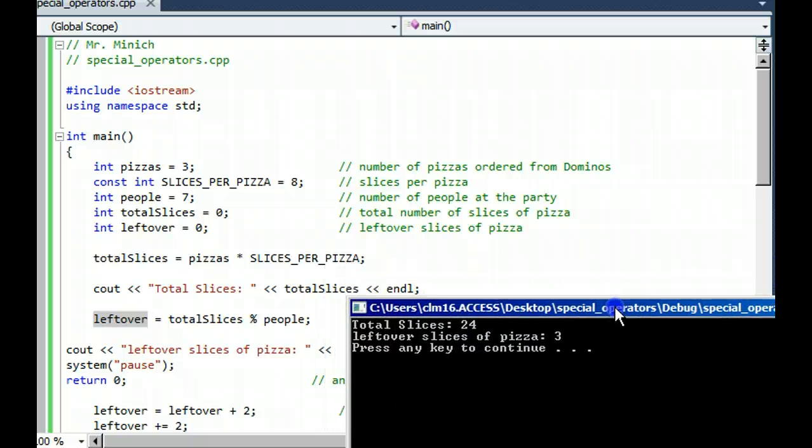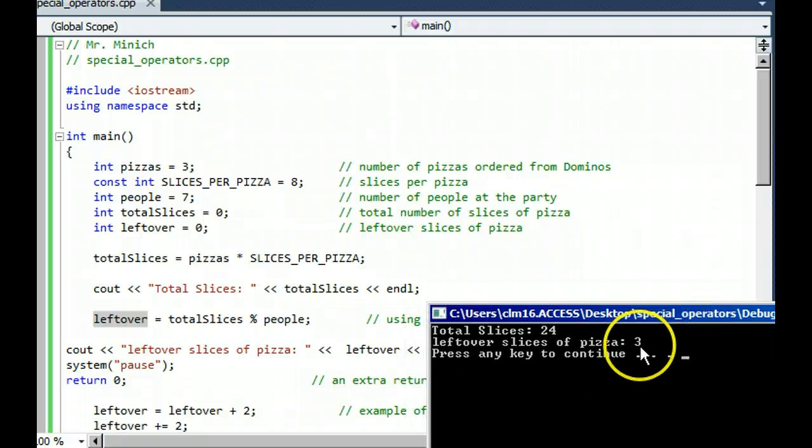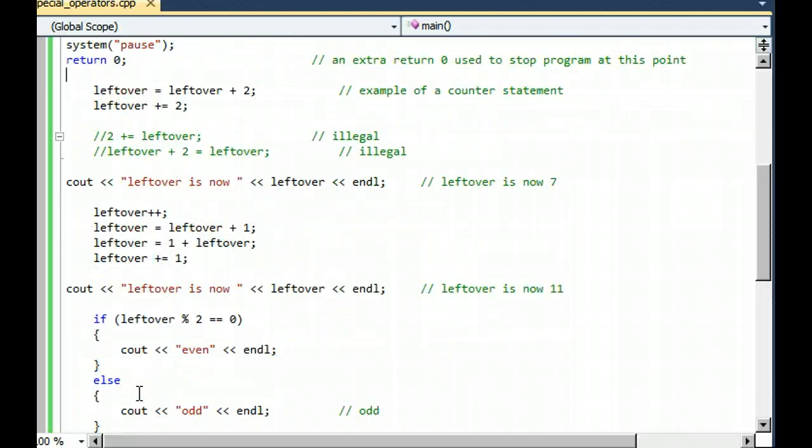In a sense, it's the answer. Leftover slices of pizza is equal to 3. Notice that we get press any key to continue because of the system pause. And then the return zero is like the end. We stop reading the book at that point, even though there are many chapters left in this demo program.